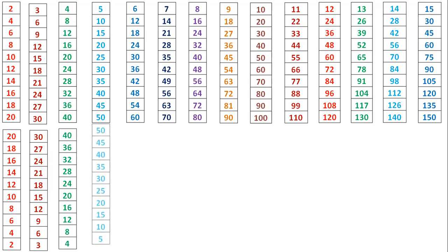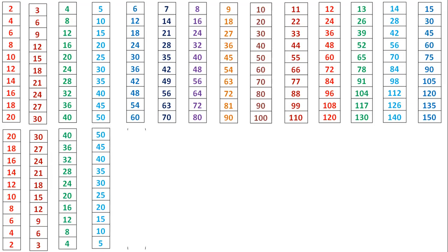5 times 10 is 50, 5 times 9 is 45, 5 times 8 is 45, 5 times 7 is 35, 5 times 6 is 35, 5 times 5 is 25, 5 times 4 is 25, 5 times 3 is 15, 5 times 2 is 10, 5 times 1 is 5.